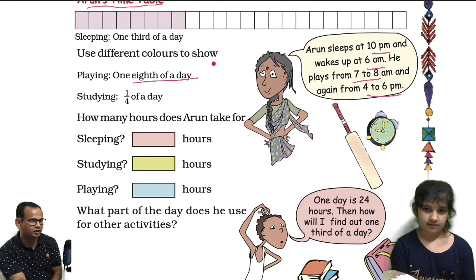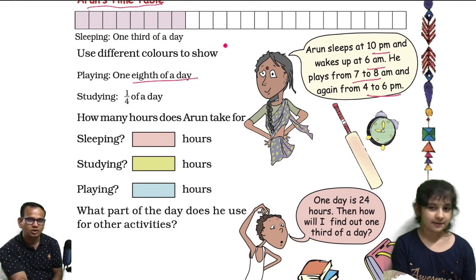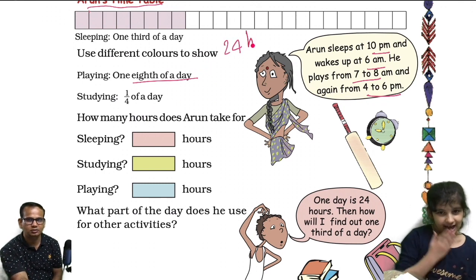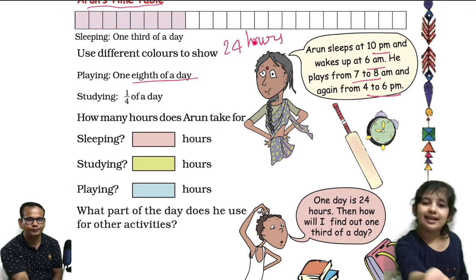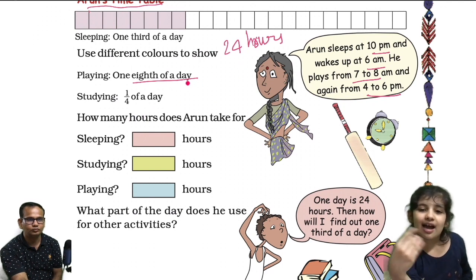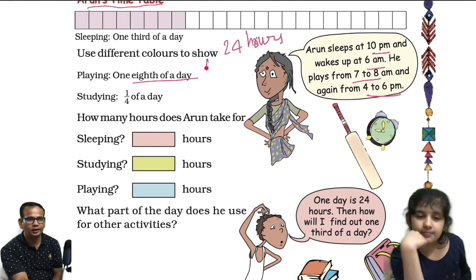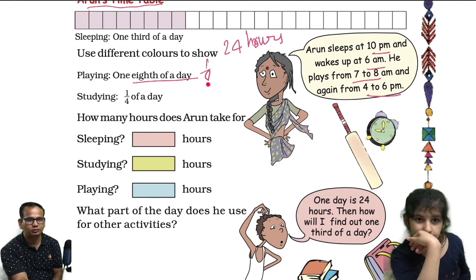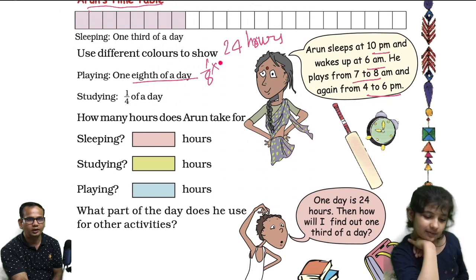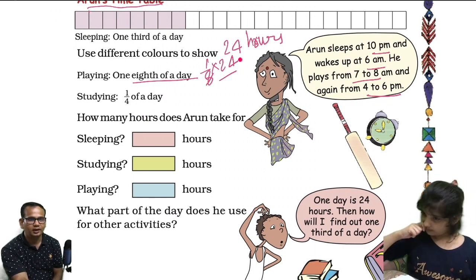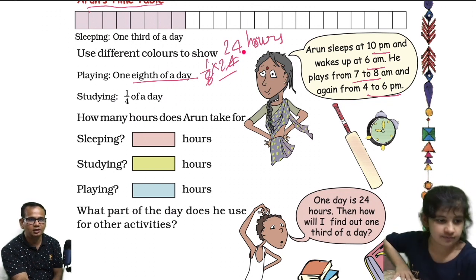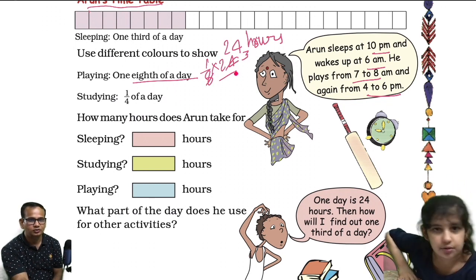Playing is one eighth of a day. A day has 24 hours. Arun confirms that one day is 24 hours. So one eighth of 24 — that is 24 divided by 8 — equals 3 hours. So the answer for playing is 3 hours.